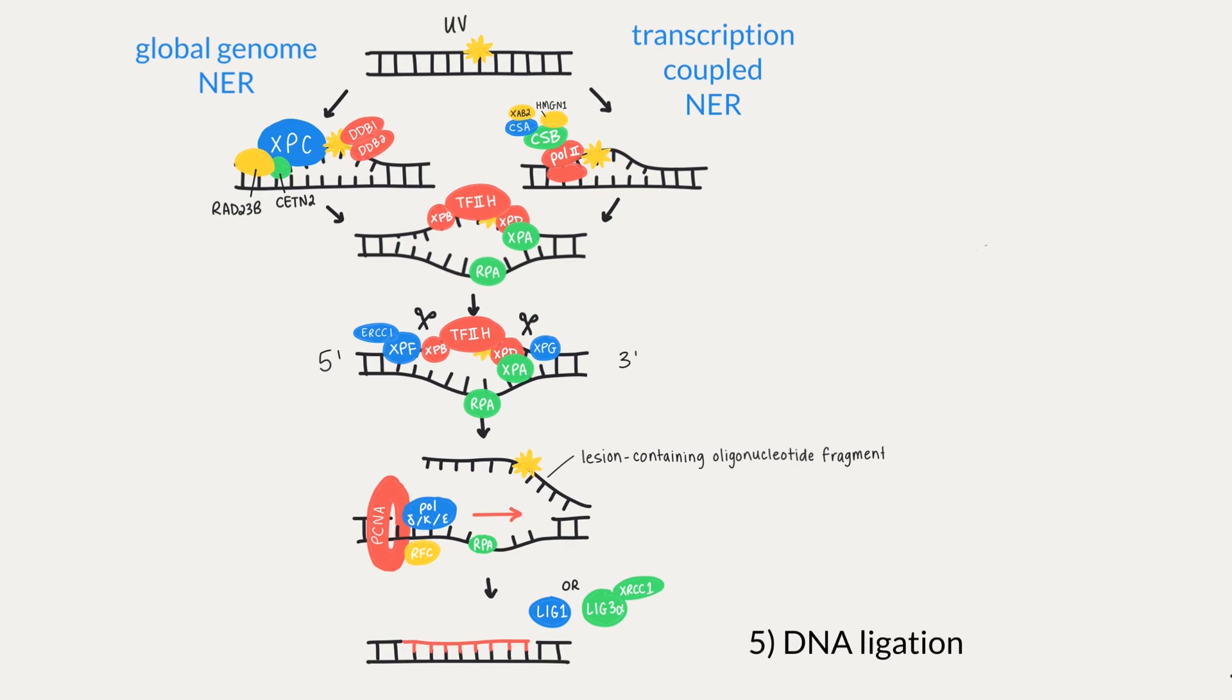In the end, we need to ligate the DNA to make sure we have a nice, smooth finish. The remaining nick in the DNA backbone is sealed with ligation by either ligase 1 or ligase 3 alpha-XRCC1. Ligase 1 seals the DNA in replicating cells, while ligase 3 alpha and its cofactor XRCC1 carry out the step in non-replicating cells.